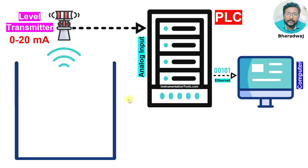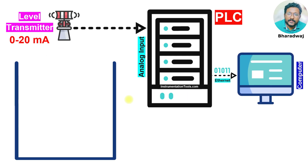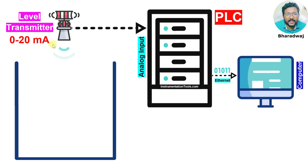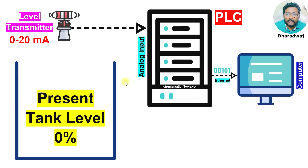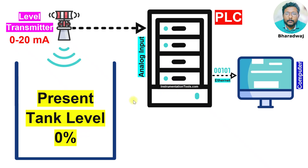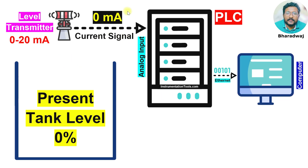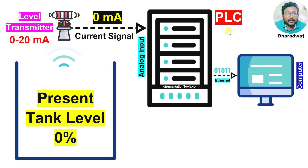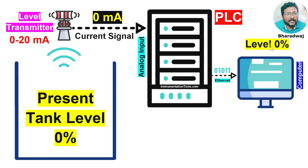The current is 0 mA to the PLC. The main point to remember is that the transmitter range is 0 to 20 mA. Let's say the present tank level is 0% — then the transmitter will send 0 mA to the PLC, and the PLC calculates the level and updates the computer graphics.